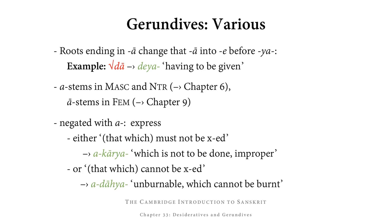So basically they decline just like priya, priyam, priyā. You can negate gerundives with the prefix short a-, and when you do that, you get one of two meanings: either that which must not be done or that which cannot be done. So, for example, akārya means that which must not be done, that which is improper. But adāhya means that which cannot be burned, that which is unburnable.